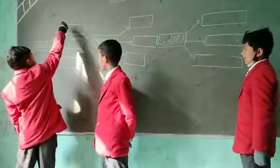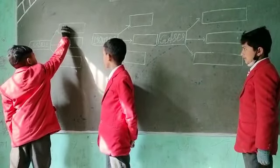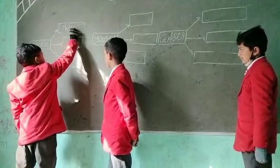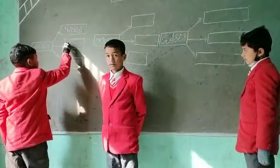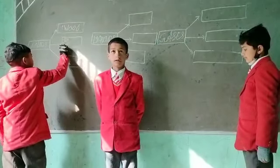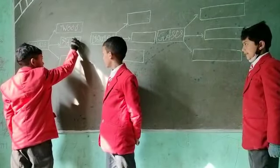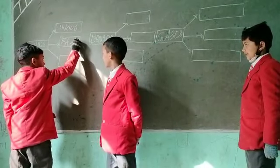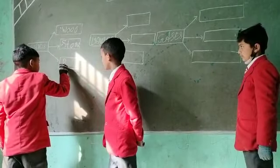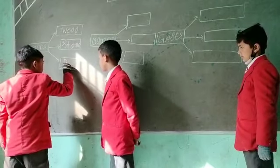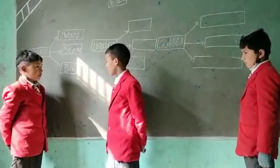Solid. First is Wood, W-O-O-D. Second is Stone, S-T-O-N-E. Third is Pen, P-E-N.